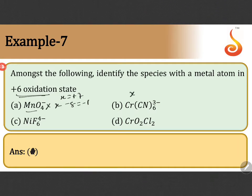Second one, cyanide is having a minus 1 oxidation state. So x minus 6 equal to minus 3. Therefore x equal to plus 3. This is also not the answer because it is not plus 6 oxidation state.